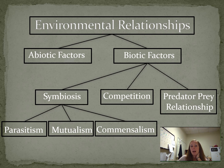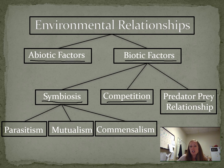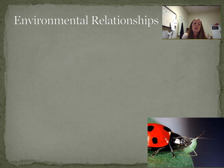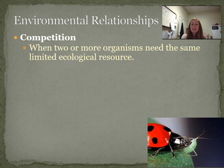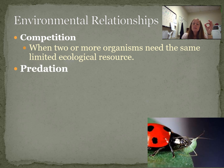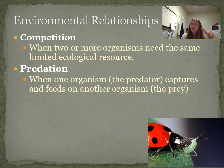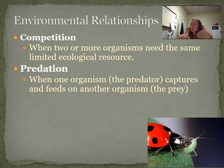Environmental relationships are first broken into abiotic and biotic factors. The biotic relationships can be symbiotic, competitive, or predator-prey. Competition is when two or more organisms need the same ecological resources — the same food, shelter, or mates — leading to conflict because resources aren't unlimited. Predation is when one organism, the predator, captures and eats the prey. For it to be predation you have to actually eat it — if a deer stampede killed you but didn't eat you, that's not predation.